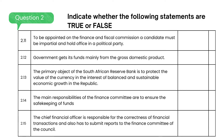Indicate whether the following statements are true or false. To be appointed on the Finance and Fiscal Commission, a candidate must be impartial and hold office in a political party — the answer is false.